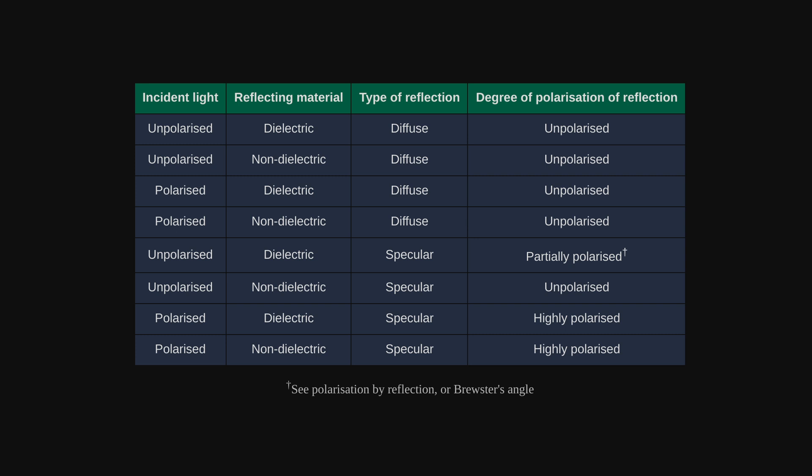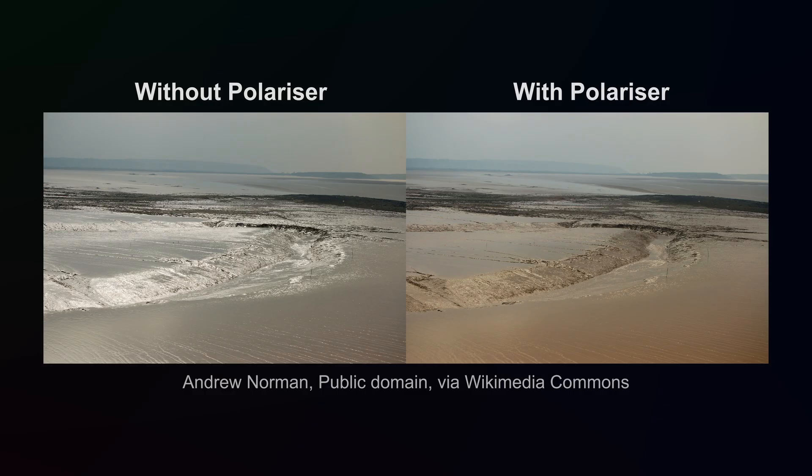Specular reflections are a bit more complicated. Specular reflections of dielectric materials can be polarized. Even if the incident light isn't polarized, light can be polarized by reflection. An example is water reflecting sunlight. The reflection is polarized, which can then be blocked by polarized sunglasses.